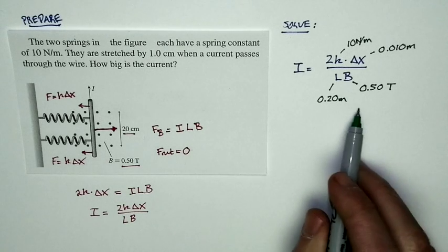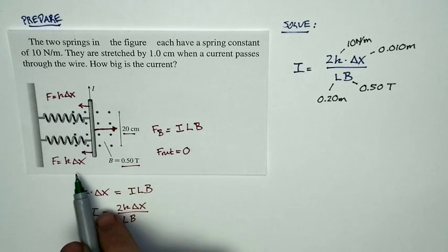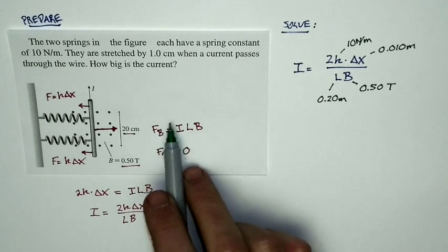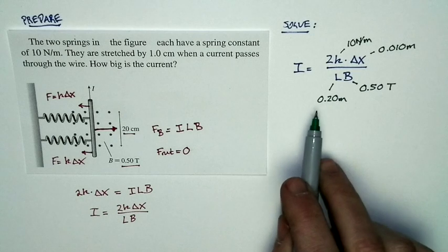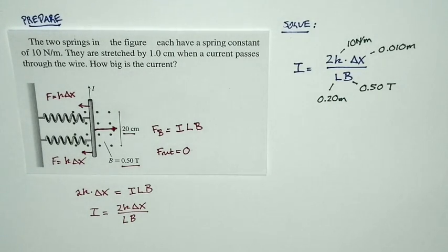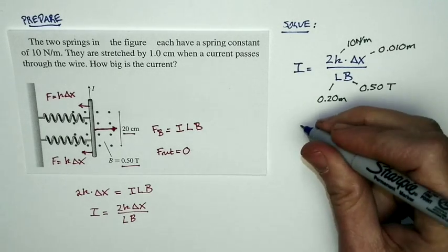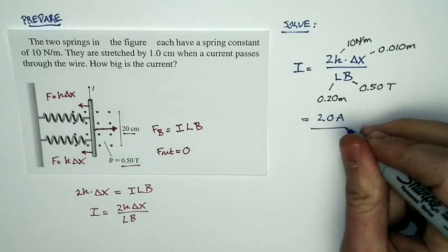So the magnetic force is going to be relatively modest. The spring force is going to be relatively modest. And that implies that we're going to have a current that's, you know, it looks like these two magnitudes are kind of comparable to each other. And so the current is going to be on the order of an amp or so. And in fact, if I calculate this out, I get a current that's 2.0 amps.